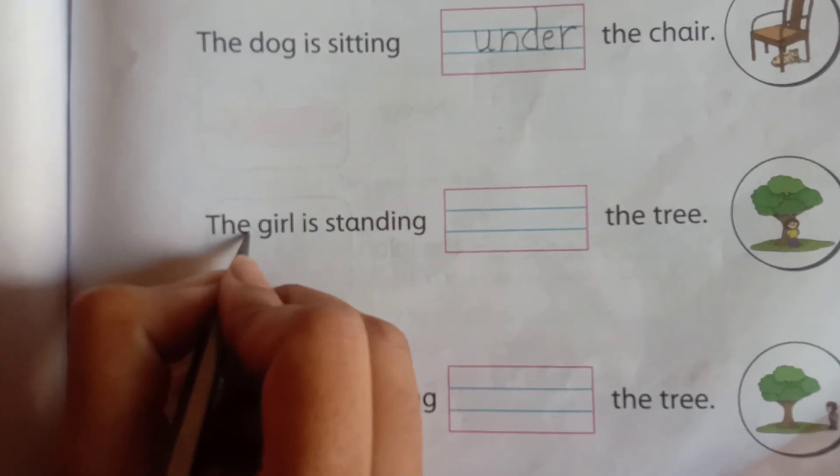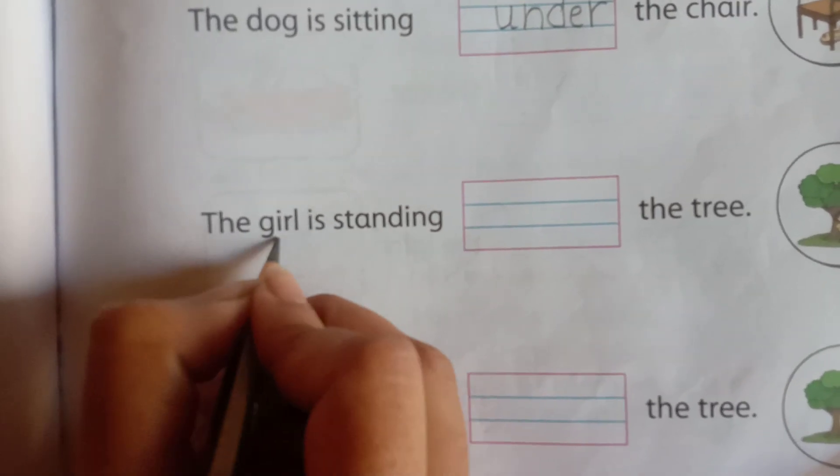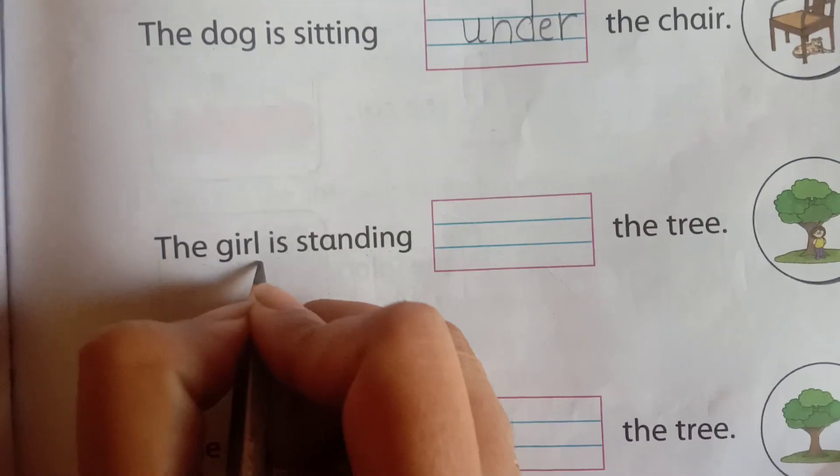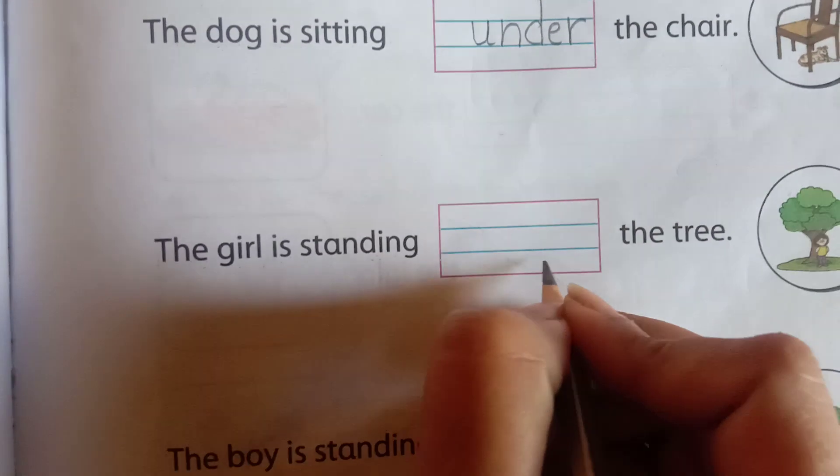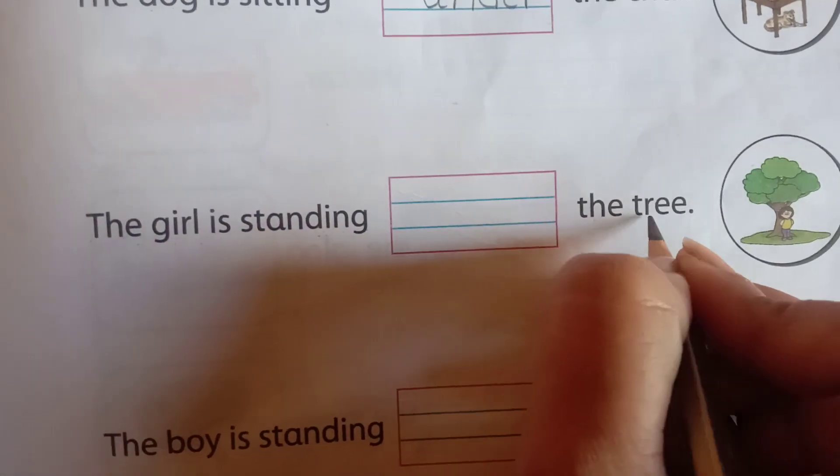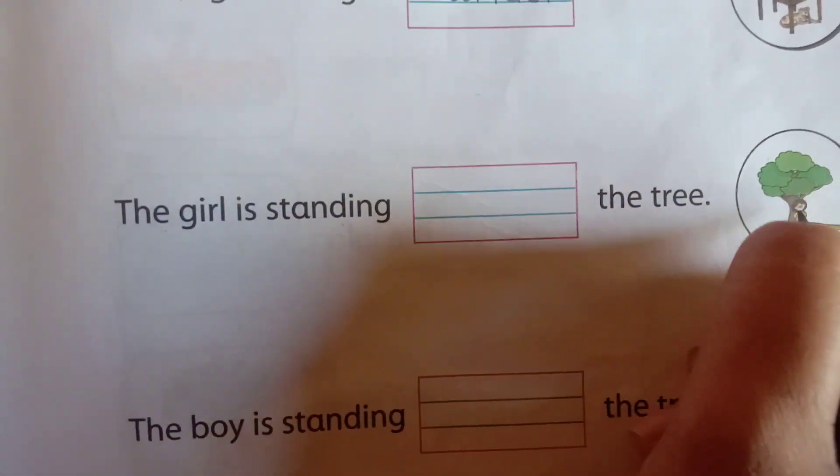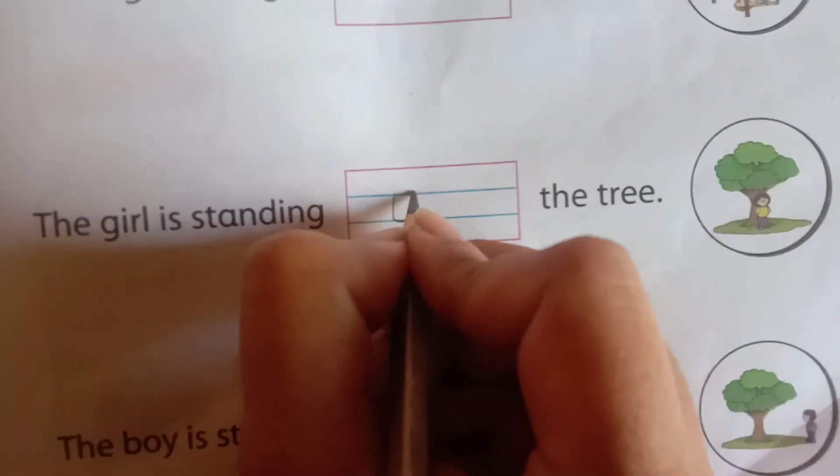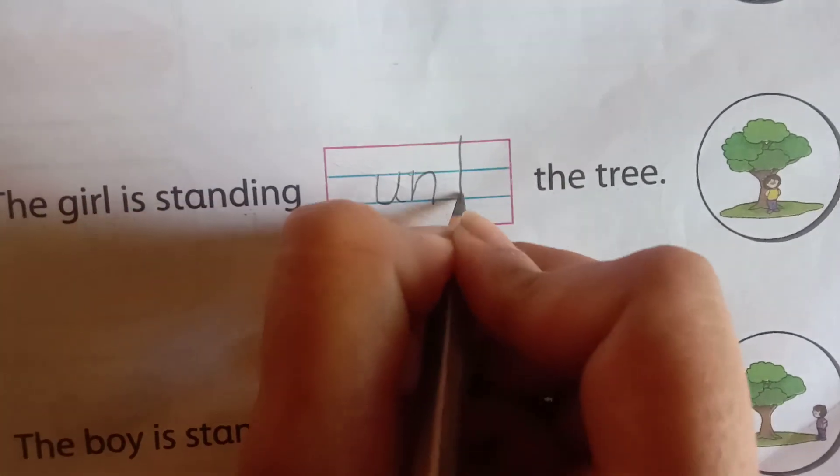The girl, girl. Is standing, standing. The girl is standing. Fill in the blanks. The tree, tree. The girl is standing. Under the tree. What will come? Under the tree.